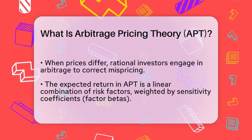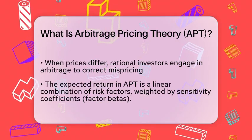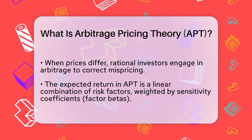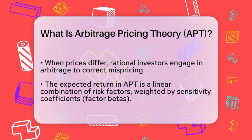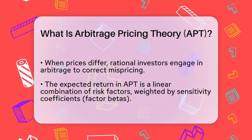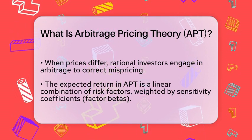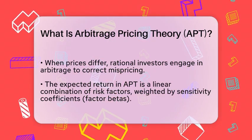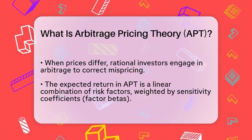The expected return of an asset in APT is expressed as a linear combination of various risk factors. Each factor is weighted by a sensitivity coefficient, often referred to as factor beta or factor loading. This coefficient measures how much the asset's return responds to each specific factor.